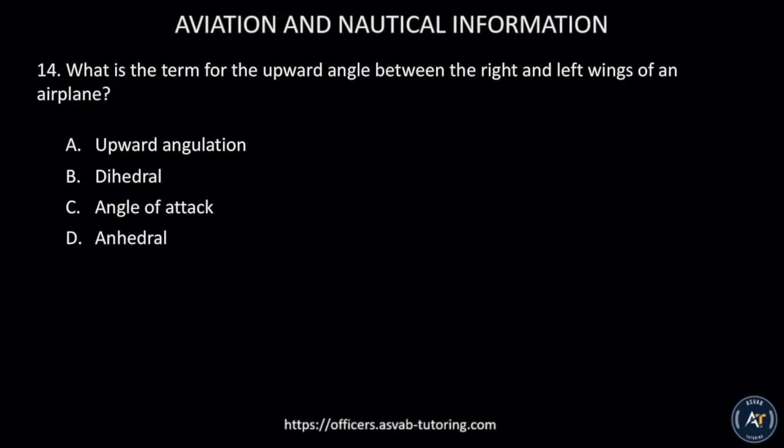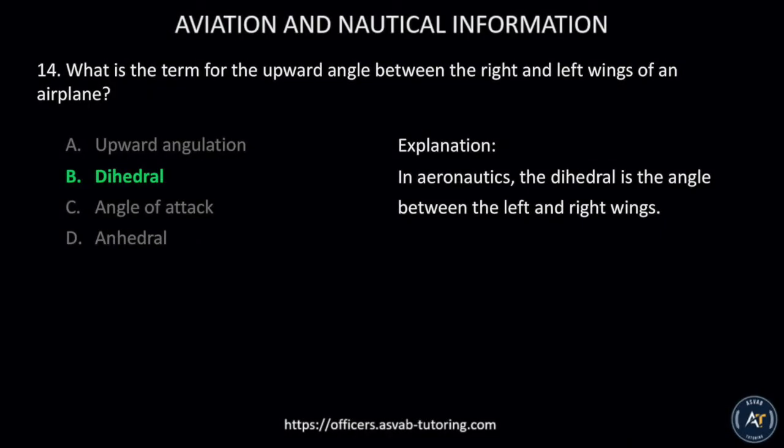Number fourteen: What is the term for the upward angle between the right and left wings of an airplane? A) Upward angulation, B) Dihedral, C) Angle of attack, or D) Anhedral. The correct answer is B, dihedral. In aeronautics, the dihedral is the angle between the left and right wings.